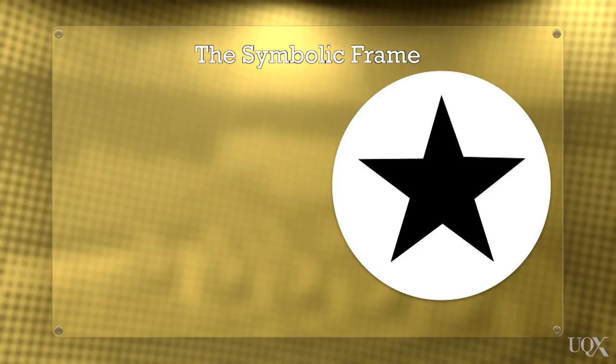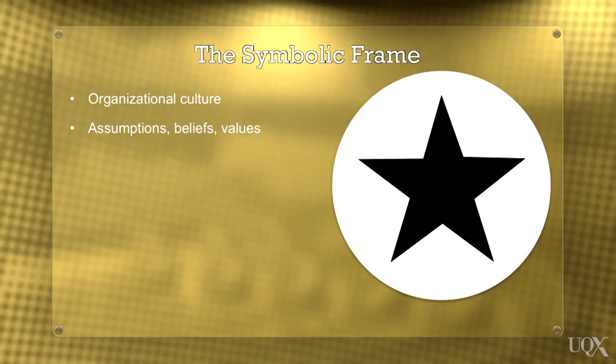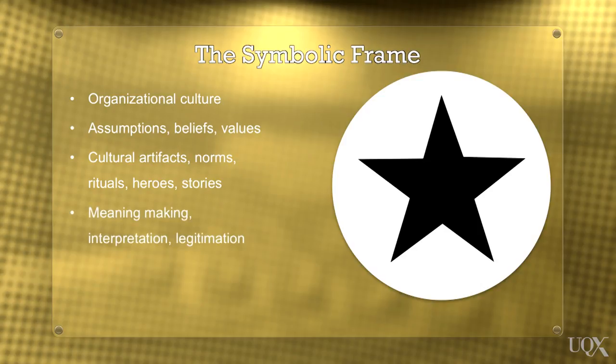And finally, in the symbolic frame, the leader takes the point of view of meaning maker through vision and values by considering organisational culture, assumptions, beliefs, values and the role of cultural artefacts, norms, rituals, heroes, stories and other forms of socialisation. This is done through understanding the processes of meaning making, interpretation and legitimation of the world, rhetoric and the use of language to represent and shape perceptions of reality and the future. By examining data or information from multiple points of view, we can gain a better understanding of how it will affect others in different ways and particularly how it will impact upon the organisation. Framing is a critical skill in the repertoire of an effective leader.